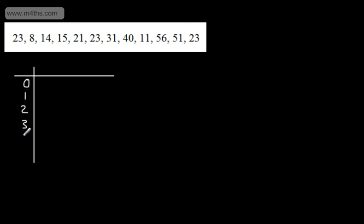So 0, 1, 2, 3, 4, and 5. If we start off with 23, 23 has a stem of 2 and a leaf of 3. So we can put this into the unordered diagram. So I've got 2, which is the tens, and 3, which is the units.